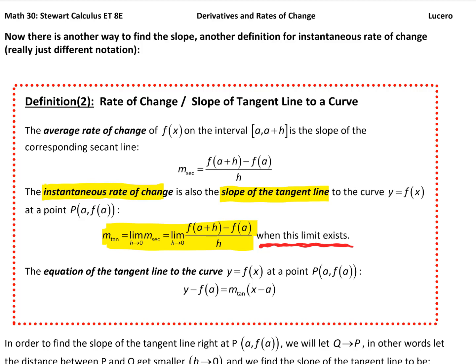If we're looking for an actual equation of a tangent line, we use some algebra to find the equation and put it into slope-intercept form. So we're going to spend some time looking at a couple of examples of finding slopes and equations of tangent lines with this definition.